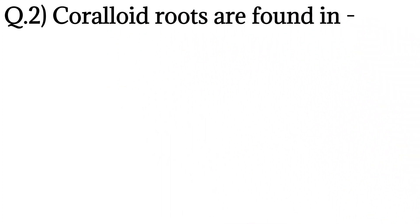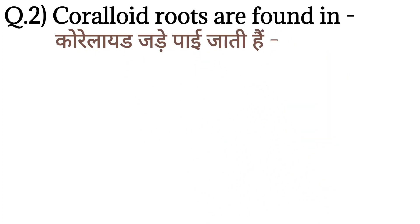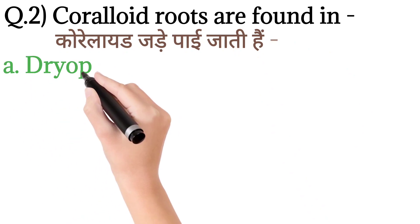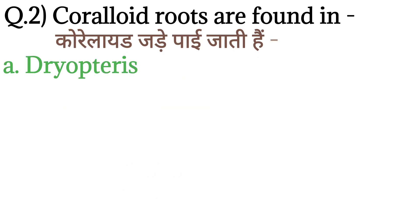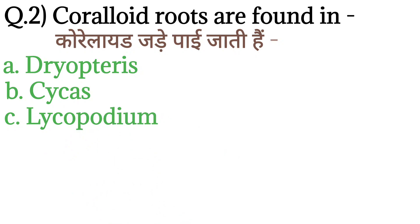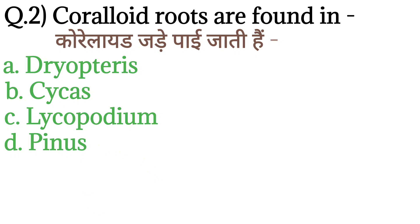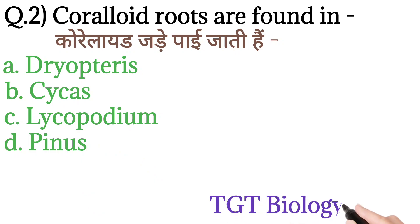Question number 2: Coralloid roots are found in — coralloid roots. Option C: Lycopodium. And option D: Pinus. This question is from DGT Biology 2005.